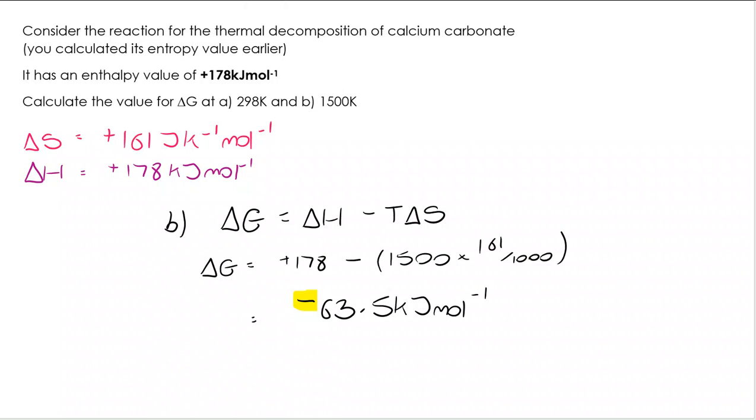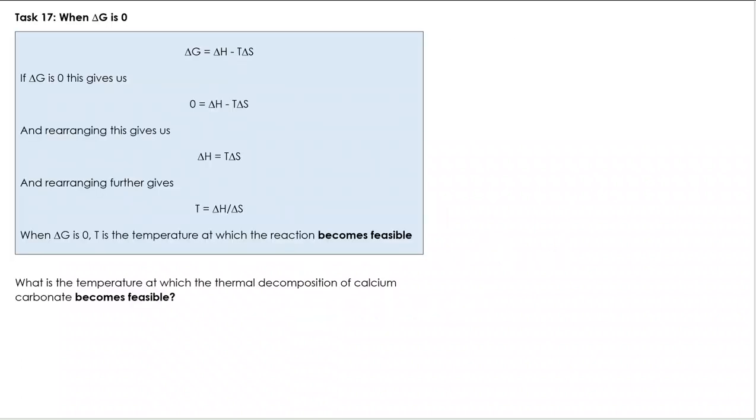Now there are a huge number of calculations that are out there on past paper questions. You'll find the thermodynamics playlist on this channel. Go and take a look at those to get some more experience at doing what can actually be quite challenging. For now we're going to take a look at a different type of delta G question. Because we've worked out that it was not feasible at 298 K but it is feasible at 1500 K, you might be asked at what temperature it became feasible, and we follow this pattern through.